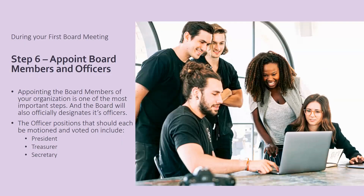Next, you will officially appoint your board members and officers. We have a temporary chair and a temporary secretary to run the rest of this meeting, but at this time you will vote on the board members for their terms — maybe one year or two years. Board members can determine if they want to accept their position and complete their board commitment forms or board member applications to make it official. Then you will vote on the officers: the president or CEO, the treasurer or CFO, and the secretary. The board and the bylaws will determine the terms of these individuals.